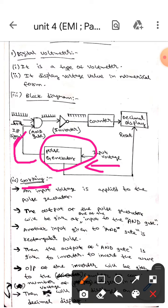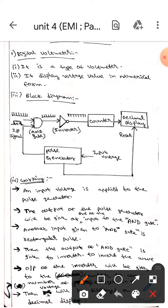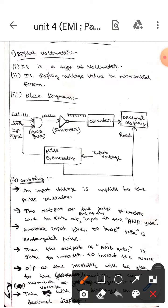The output of the pulse generator is given as input to the AND gate as one input. The other input is a rectangle train pulse. Then the output of the AND gate is given as input to the inverter.